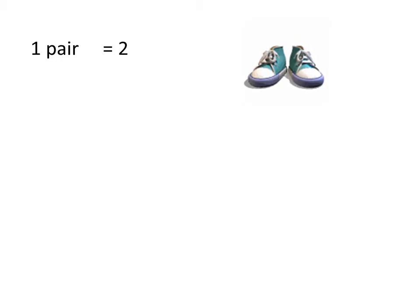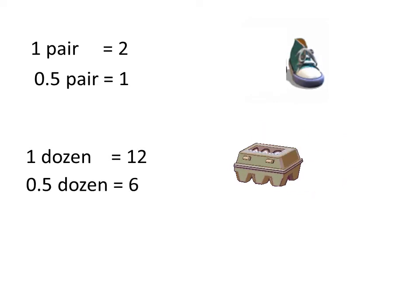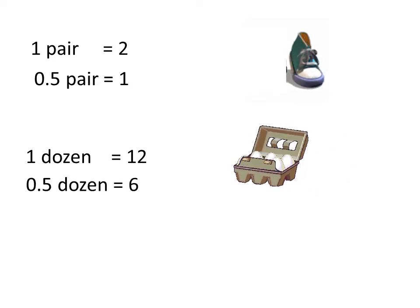Just like a pair is equal to two items, if we take half a pair, it's equal to one item. If we take a dozen eggs, then half a dozen is equal to six. We're just dividing it through by two.